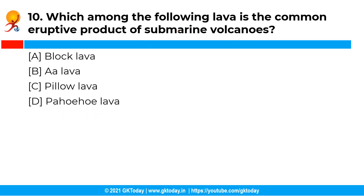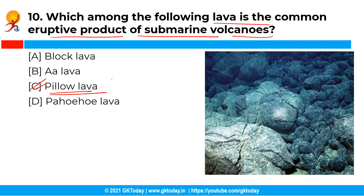The next question is: which among the following lava is the common eruptive product of submarine volcanoes? The correct answer is option C — pillow lava. Pillow lava is attributed to the extrusion of lava underwater.